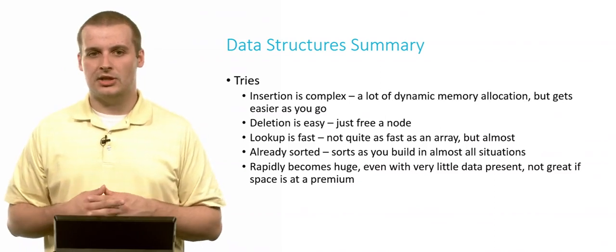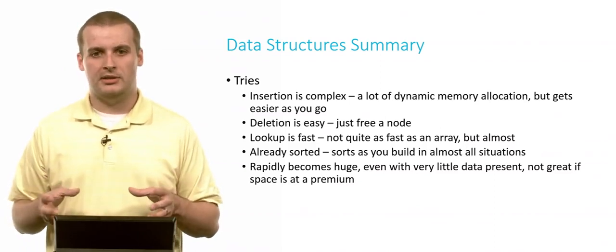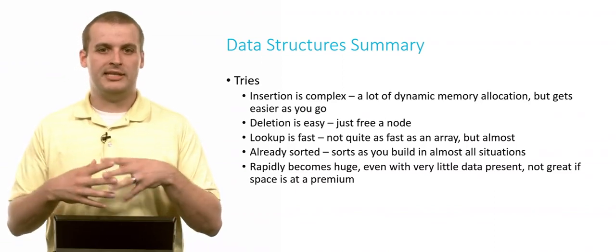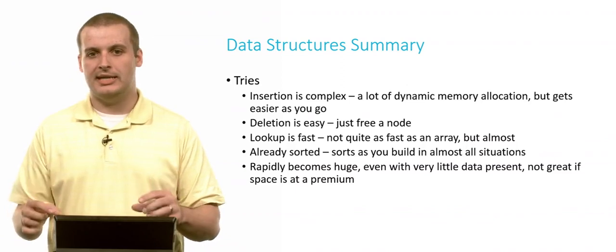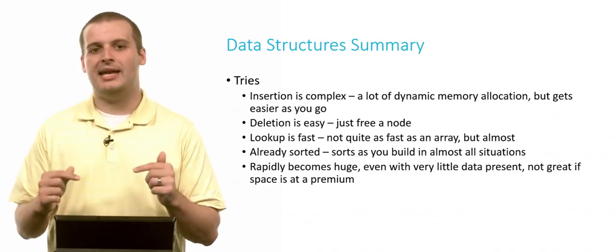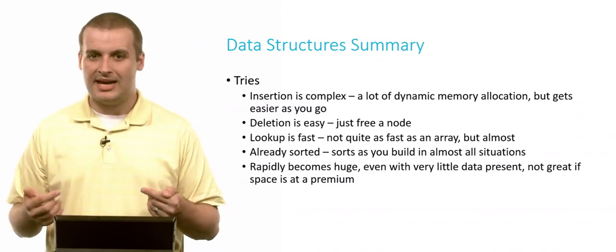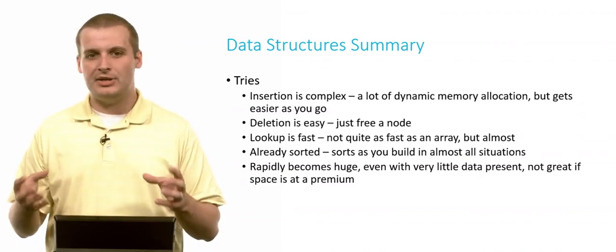The downside, of course, is that a try rapidly becomes huge. From every junction point you might have, if your key consists of digits, you have 10 other places you can go, which means that every node contains information about the data you want to store at that node plus 10 pointers, which on CS50 IDE is 80 bytes. So it's at least 80 bytes for every node that you create, and that's not even counting data.